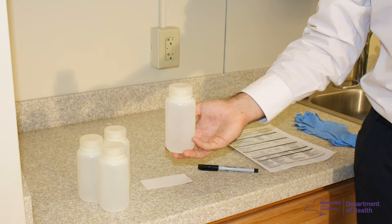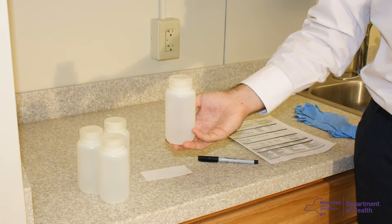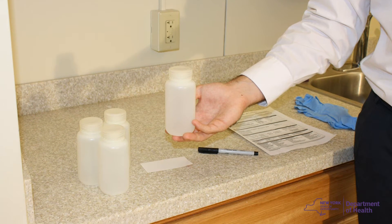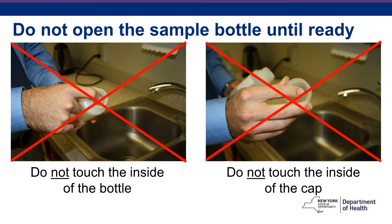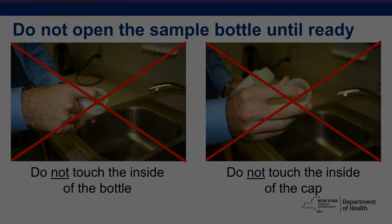Use only 250-milliliter sample containers supplied by the ELAP-certified laboratory. EPA recommends using wide-mouth bottles to ensure you are capturing all water that flows from the outlet. Containers should not be opened until you are ready to collect the sample. Sampling containers that have been compromised in any way, such as being touched on the inside surfaces of the bottle or cap, cannot be used. Keep food and drink away from the sampling containers.